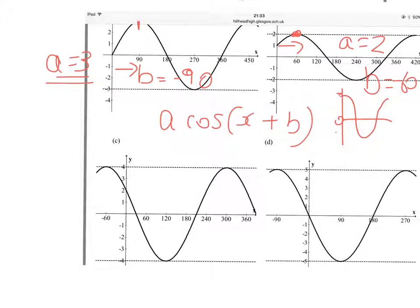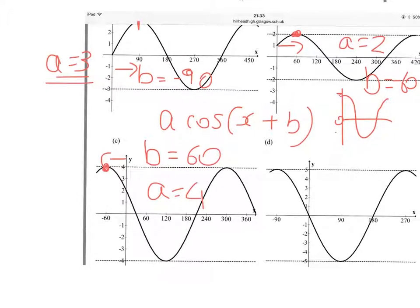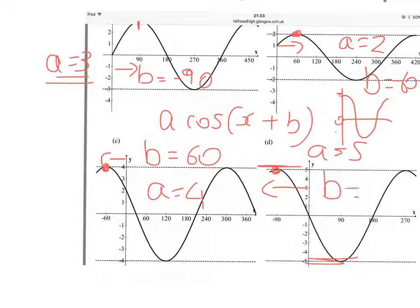For this one, it starts to drop from a peak at minus 60, so this curve has been pulled 60 degrees to the left, in the negative direction. So B is plus 60. Amplitude is 4. Amplitude of this one is 5. This curve starts to drop from a peak at minus 90, so it's been pulled 90 degrees to the left, in the negative direction. But counterintuitively again, B is equal to plus 90.